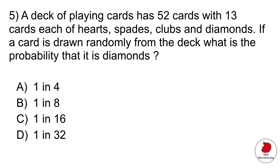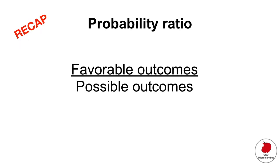Question five is a probability and statistics question. A deck of cards has 52 cards with 13 cards each of hearts, spades, clubs and diamonds. If a card is drawn at random from the deck, what is the probability that it is diamonds? You have to remember this formula for probability ratios which tells you that for any random event, you have to divide the favorable outcome by the total number of possible outcomes.